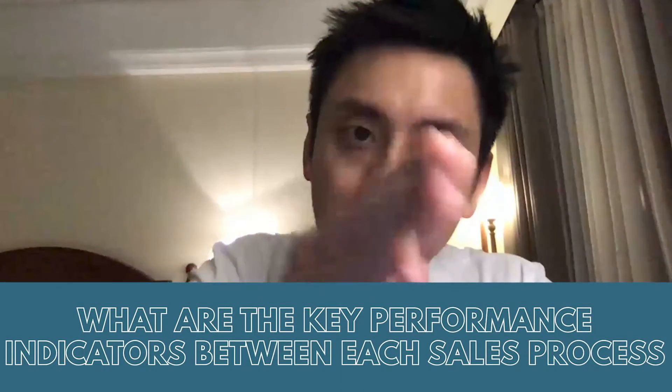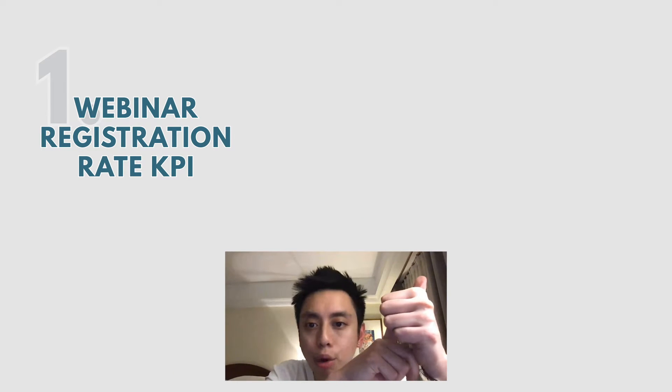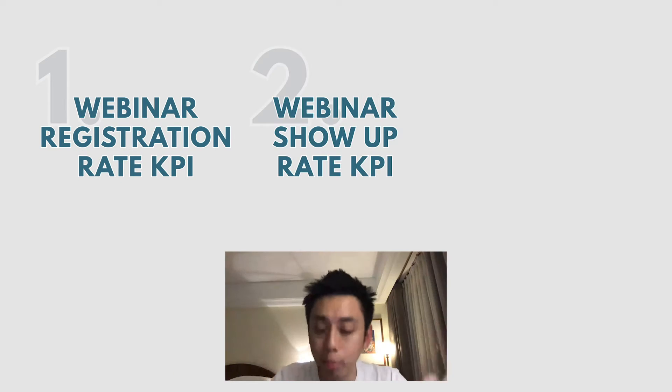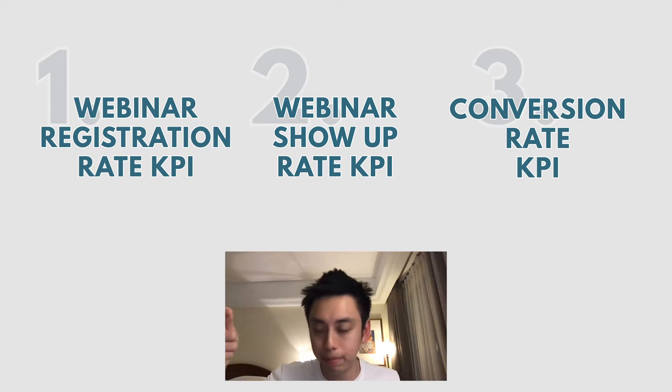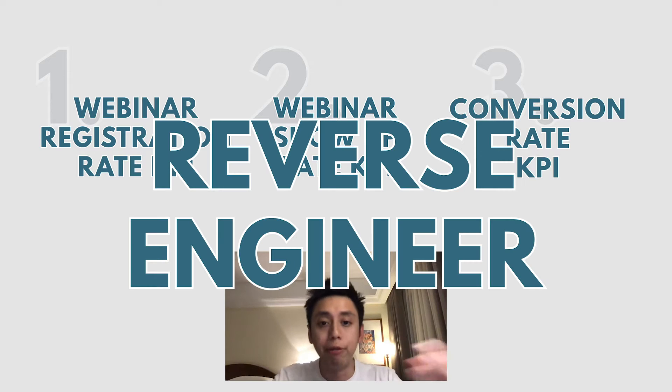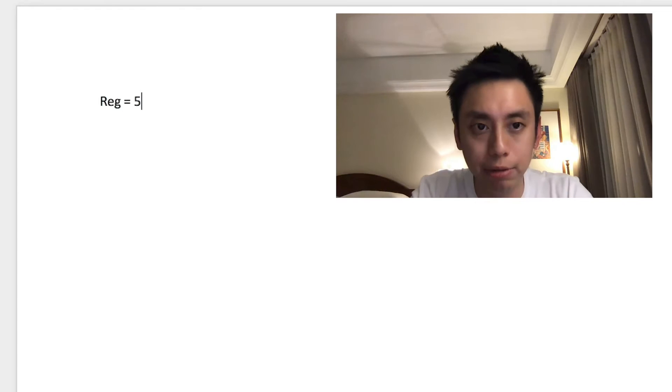Imagine you're sending people to a webinar funnel with three steps: a webinar registration page, a webinar thank-you page, and the live webinar. Rather than just spending $1,000 and hoping for the best, you need to ask: what is the webinar registration rate I need to hit? What is the show-up rate? Out of the people that show up, what is the conversion rate? Let's say it's a $1,000 product with 10% conversions. If my registration rate is 50% and my show-up rate is 50% and conversion is 10% for a $997 offer, I can now simulate and reverse engineer the numbers.